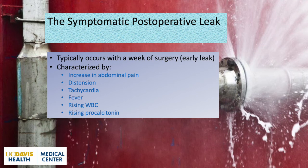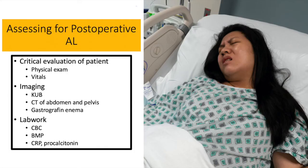The symptomatic postoperative leak may be characterized by increased abdominal pain, distension, tachycardia, fever, elevated white count, and a rising procalcitonin level. In the postoperative setting, early detection is essential. A critical evaluation of the patient is needed, including a physical exam with vital signs. Imaging and lab work may be warranted. CRP and procalcitonin can be helpful values when used strategically.